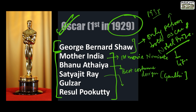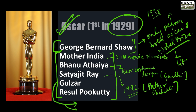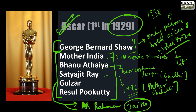Satyajit Ray was the first Indian to get a Grammy and also received the most Grammys among Indians. He received an Honorary Lifetime Achievement Award from the Oscars in 1992 for Pather Panchali. Gulzar and A.R. Rahman received Oscars for the song 'Jai Ho' from Slumdog Millionaire. Rasool Pookutty also received an Oscar for Slumdog Millionaire for Best Sound Mixing.